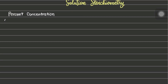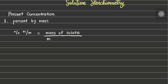First, we will be discussing percent by mass or mass-mass percent. It is the percentage unit most often used in chemical laboratories. It is the mass of solute in a solution divided by the total mass of solution, multiplied by 100. The solute and solution masses must be measured in the same unit, which is usually grams. The mass of the solution is equal to the mass of the solute plus the mass of the solvent.